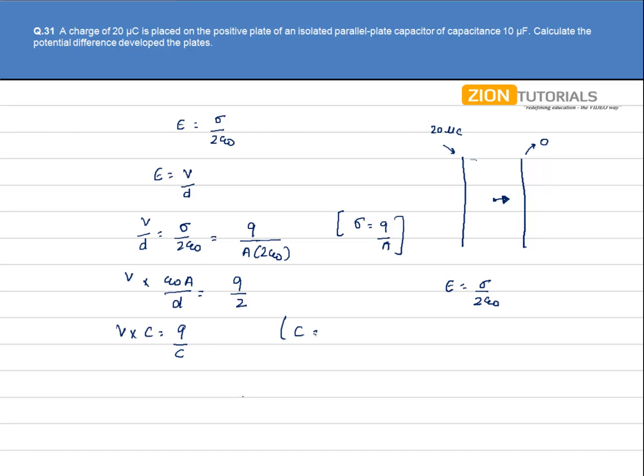Because capacitance is given by epsilon not A by D. This will be 2.